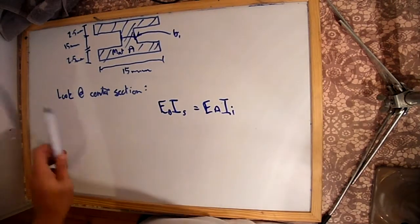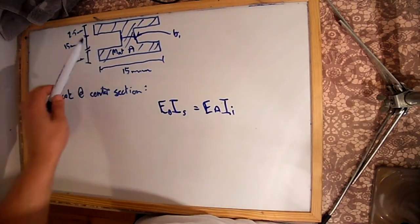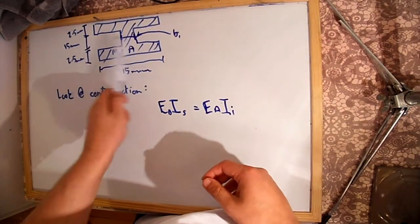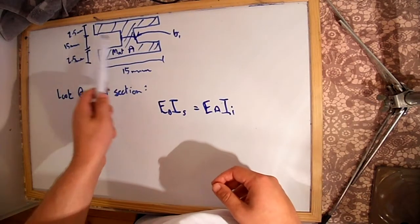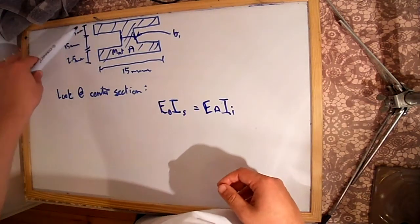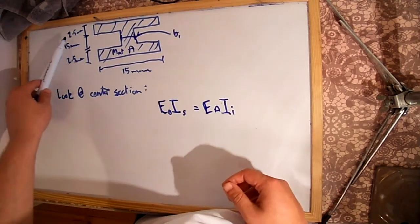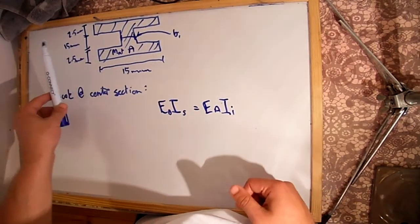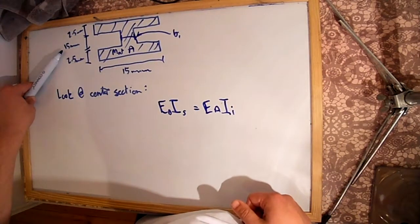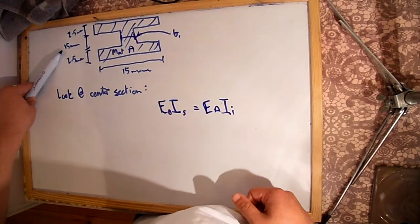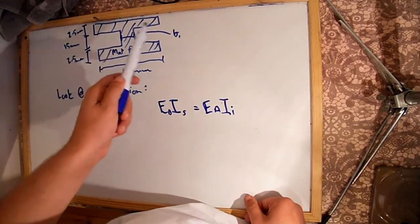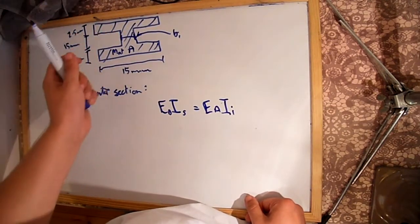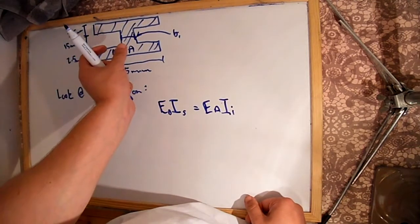Here we have an I-beam where I've taken the solid section and changed the width of the centre section which contains material B. The I-beam still has the top and bottom as material A with the same overall thickness and width. The centre section is still 15 mm in height, but we're going to change the base width of the equivalent material A placed in the centre section.